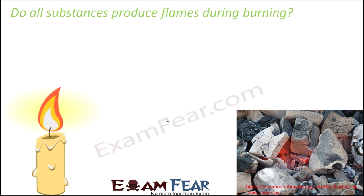Now let us take another example: charcoal. Charcoal is obtained by heating wood in the absence of oxygen. So if you heat wood, what you get is charcoal, and charcoal also acts as a fuel. Now when you burn charcoal, do you see flames? As the picture clearly shows, there is no flame as such — all you can see is a reddish glow, but no flame. So not all combustible substances produce flames, but heat is still produced, meaning combustion is taking place without flames.